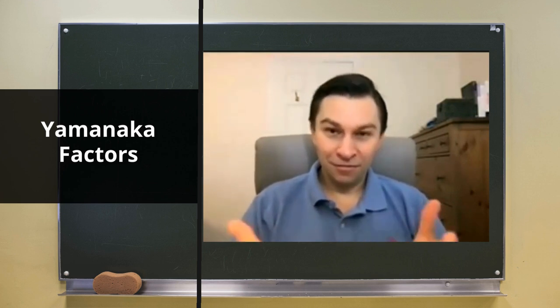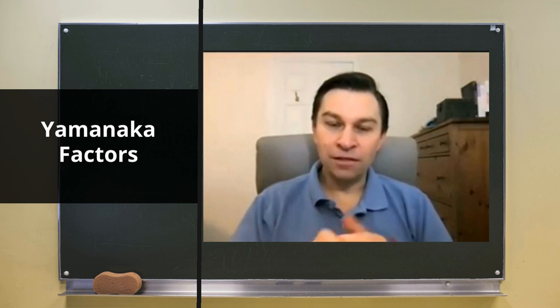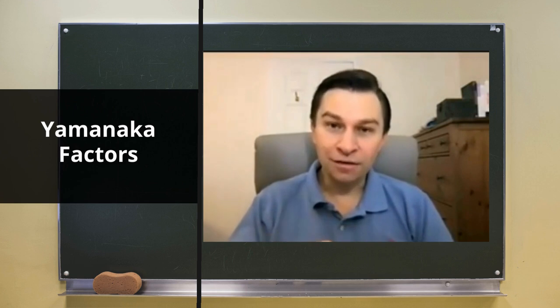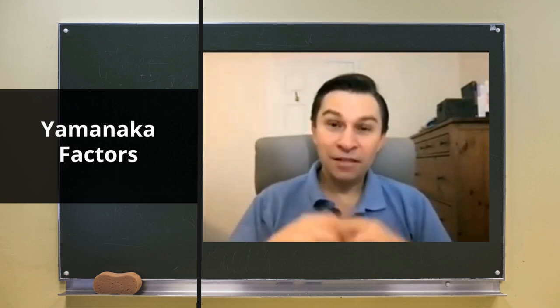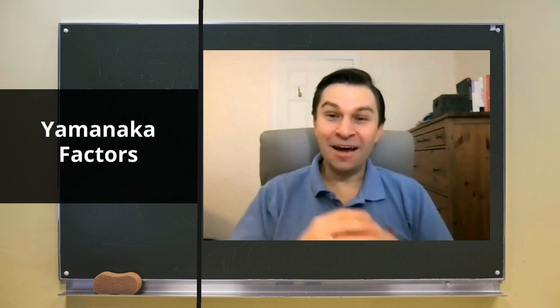These are now known as the Yamanaka factors: OCT4, SOX2, KLF4, and c-MYC. c-MYC is an important one to point out because it's also a potent oncogene, which is dangerous. That's the main reason Dr. Yamanaka confessed to me that it was sensible to put his genes in an adult.